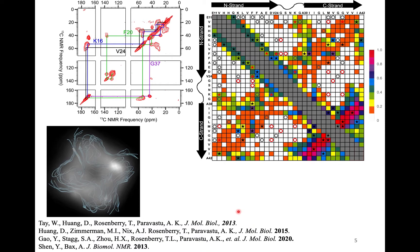Here's a little more detail on the Alzheimer's beta amyloid oligomer. A sample data set indicating proximities between atoms and specific amino acids, a map of how amino acids are arranged in three dimensions, and a computer model superimposed on a cryo electron microscopy image.